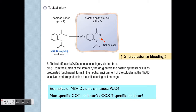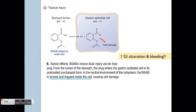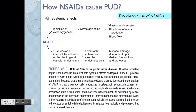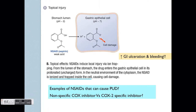Find out what examples of NSAIDs commonly cause PUD. There is a difference between the non-specific COX inhibitor — which equally inhibits COX-1 and COX-2 — versus the COX-2 specific inhibitor. In general, COX-1 is theoretically the more protective one. So if someone with PUD needs to use NSAIDs long term, we actually recommend a COX-2 specific inhibitor because it reduces the risk of PUD by reducing the loss of protective prostaglandins in the stomach.